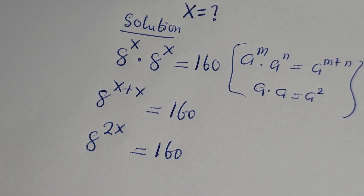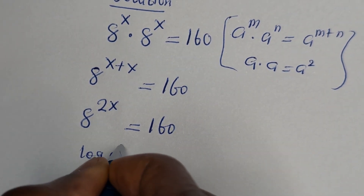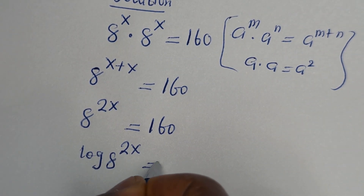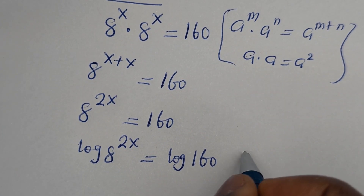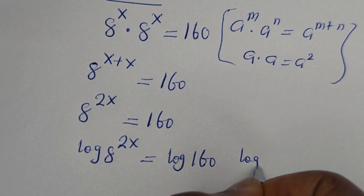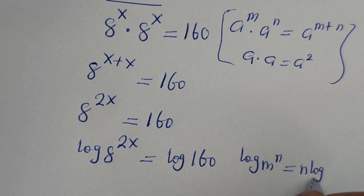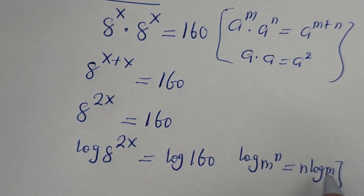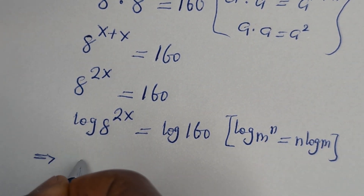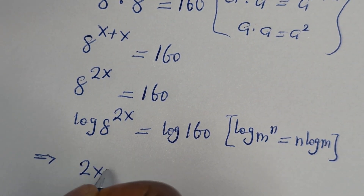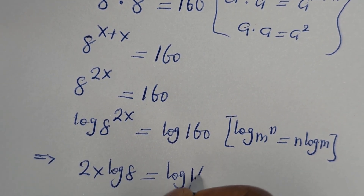Let us take the log on both sides. Log of a raised to power 2x is equal to log 160. Take note that if you have log m raised to power n, this is equal to n log m. This can be written as 2x log 8 is equal to log 160.